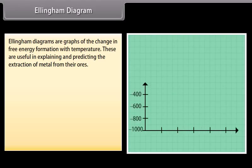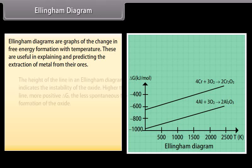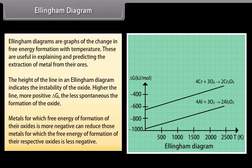Ellingham Diagram. Ellingham Diagrams are graphs of the change in free energy formation with temperature. These are useful in explaining and predicting the extraction of metal from their ores. The height of the line in an Ellingham Diagram indicates the instability of the oxide. Higher the line, more positive ΔG, the less spontaneous the formation of the oxide. Metals for which free energy of formation of their oxides is more negative can reduce those metals for which the free energy of formation of their respective oxides is less negative.